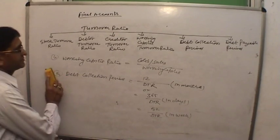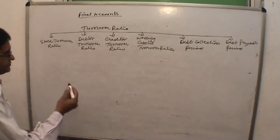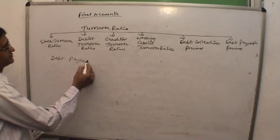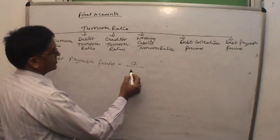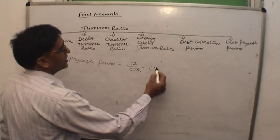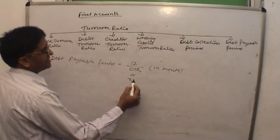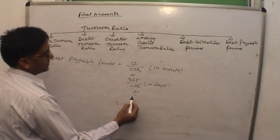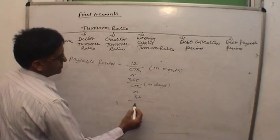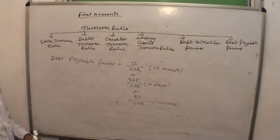The creditor payable period equals 12 divided by creditor turnover ratio (CTR) if you want to calculate in months, or 365 divided by CTR if you want to calculate in days, or 52 divided by CTR if you want to calculate in weeks. These are the formulas of turnover ratio and composite ratio.